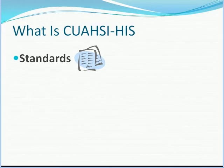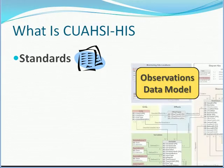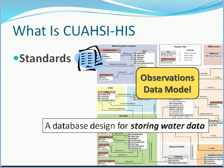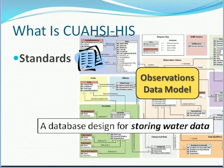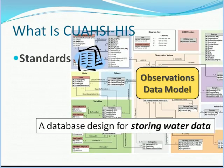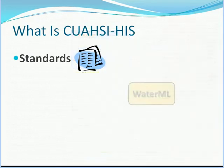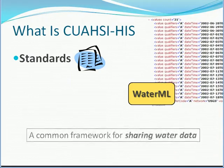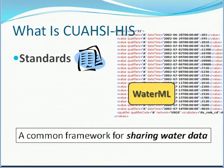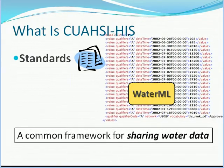The Quasi-HIS is designed to improve access to water data. It consists of standards such as the Observations Data Model for storing water data, and the WaterMill Language, which establishes a common framework for sharing water data.